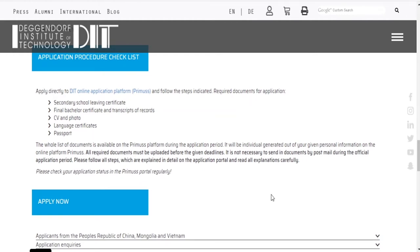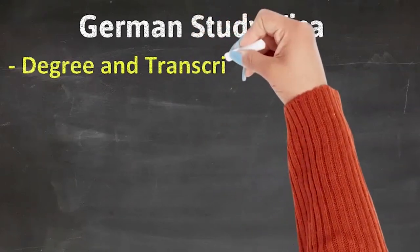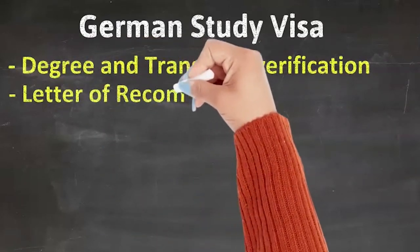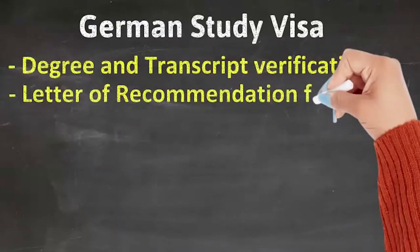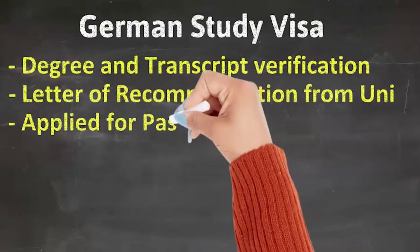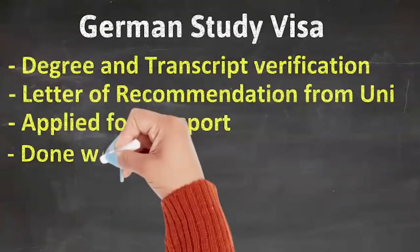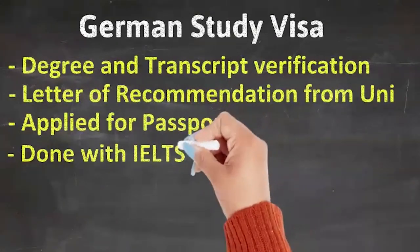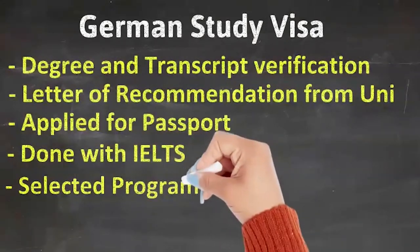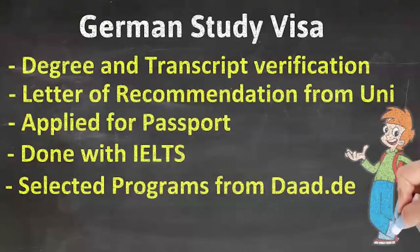So that was the complete overview of how to filter your course on daad.de. To summarize: verify your degree and transcript from the Higher Education Commission, collect recommendation letters from your professors, have your passport ready, complete or schedule your IELTS exam, and shortlist programs from daad.de. Now we'll move ahead to the next steps.